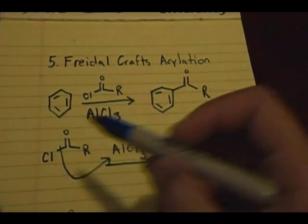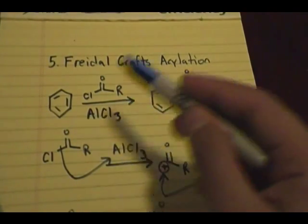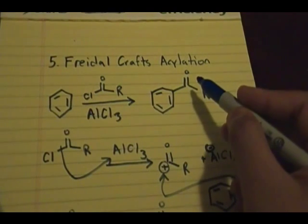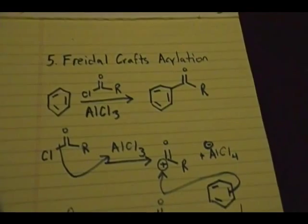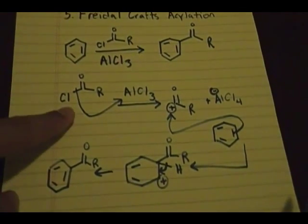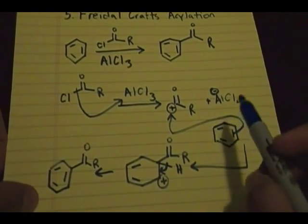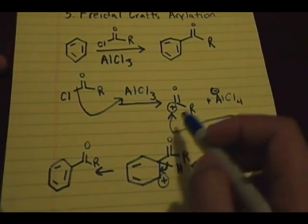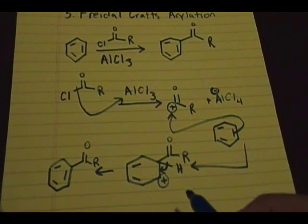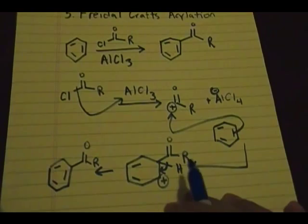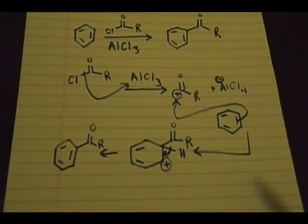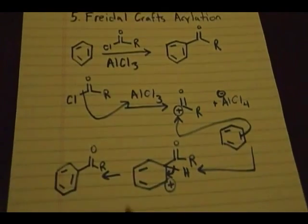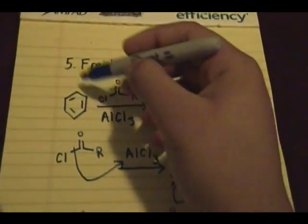The fifth reaction is Friedel-Crafts acylation. You have the aromatic ring with the acyl group and AlCl3 as reagents, forming the aromatic ring with a ketone attached. The mechanism: electrons and chlorine add to AlCl3, generating a carbocation intermediate and AlCl4 minus. A pair of electrons from the aromatic ring attack the acyl group, forming an intermediate with a positive charge, then elimination gives the product — the aromatic ring with a carbonyl group and R, which can be any alkyl group. Again, this reaction will not work if you have NO2, NH2, or a strong electron withdrawing group on the aromatic ring.